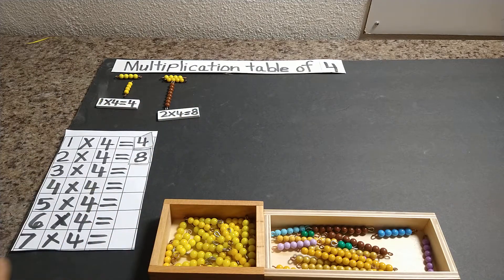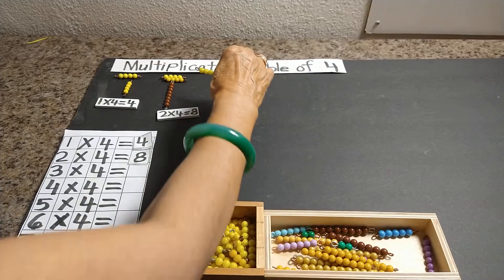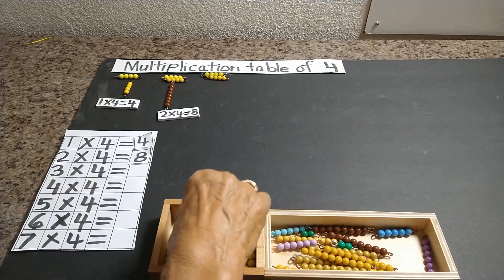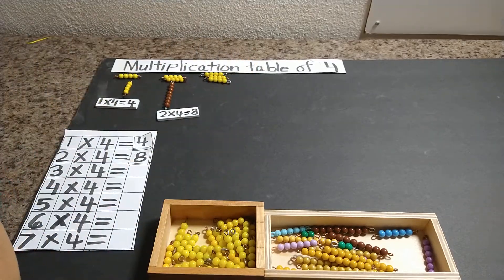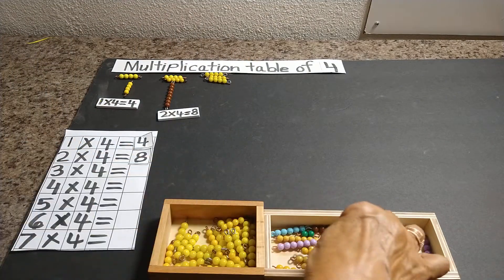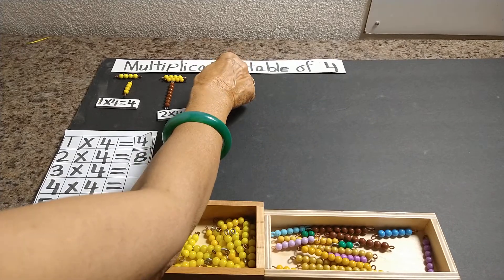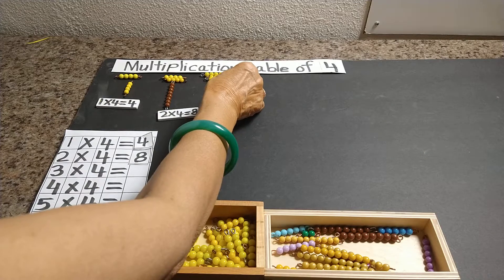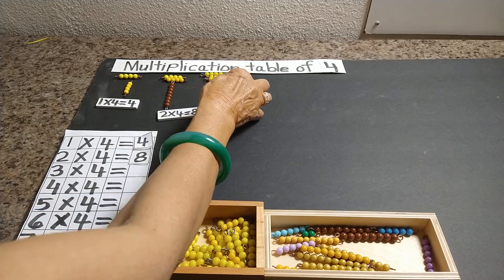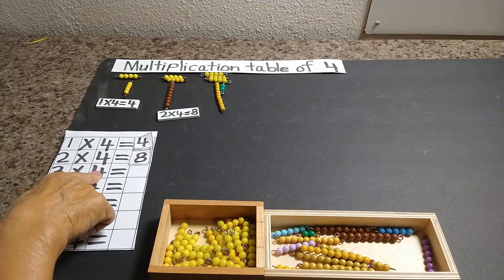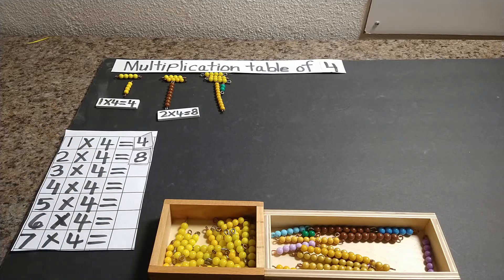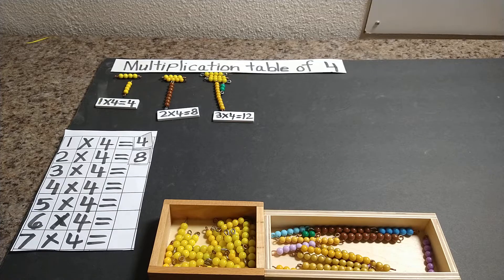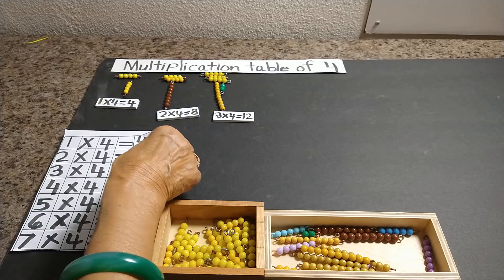3 times 4. So 1 times 4, 2 times 4, 3 times 4. 3 times 4 is 12. So we need 1 ten bar and 2 bead bars. 10 and 2 more are 12. So 3 times 4 is 12. So I have a label for that. And here 3 times 4 is 12.